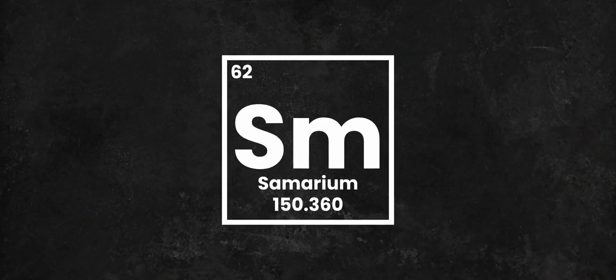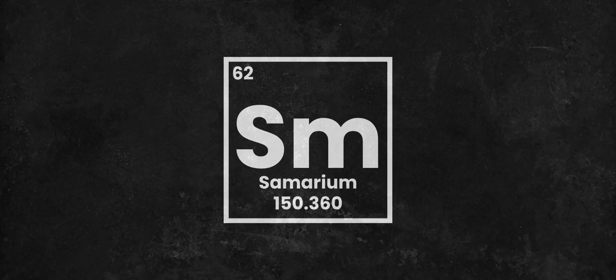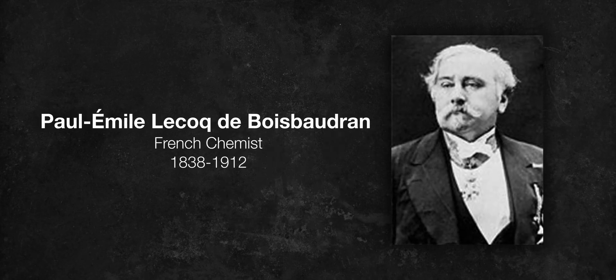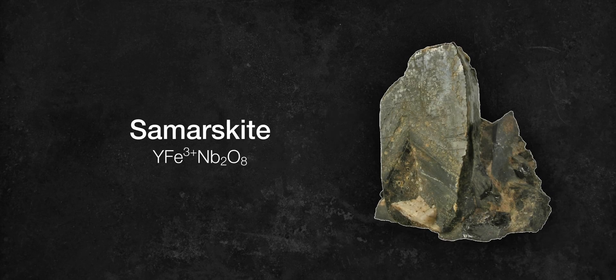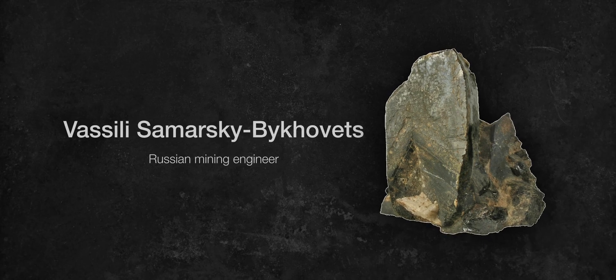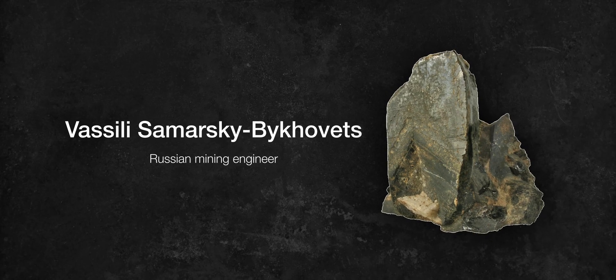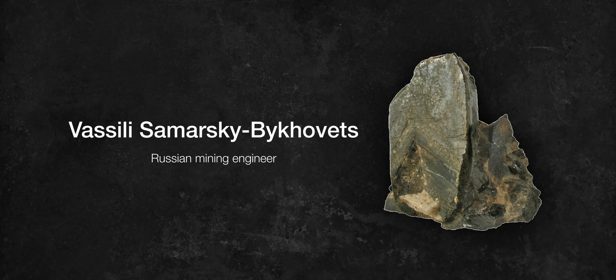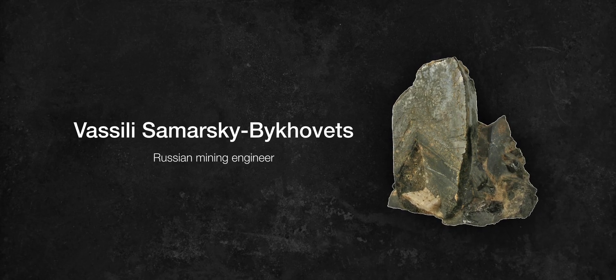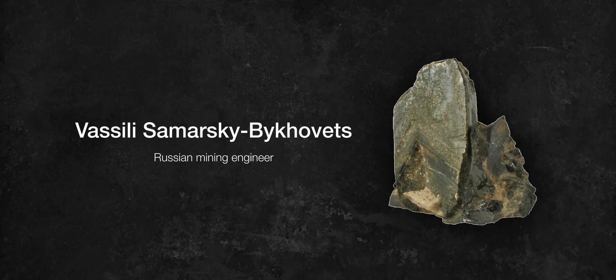The element Samarium was first discovered by French chemist Paul-Émile Lecoq de Boisbaudran in the year 1879. It got its name from a mineral called Samarskite from which it was isolated. The mineral was named after a Russian mine official, Colonel Vasily Samarsky, who became the first person to have an element named after them.